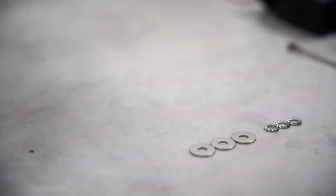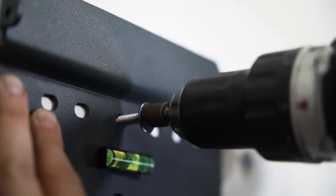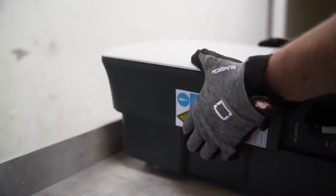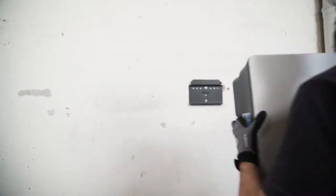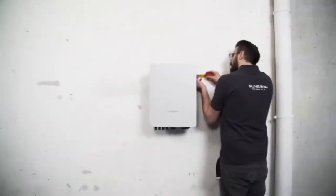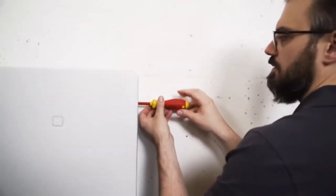You will also need a cordless screwdriver for attaching the mounting plate. The required screws are part of the delivery. Due to the light weight, the inverter can easily be mounted by a single person. For the lift-out protection, you need a cross screwdriver to fix the two M4 fixing screws and washers.